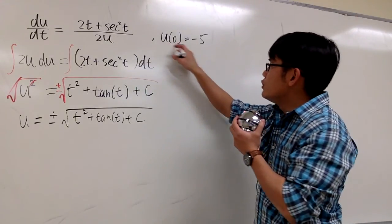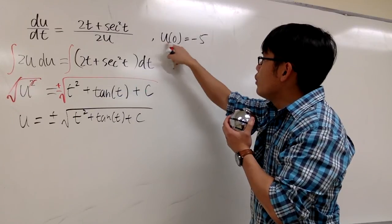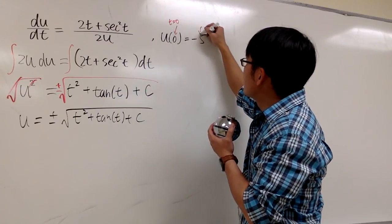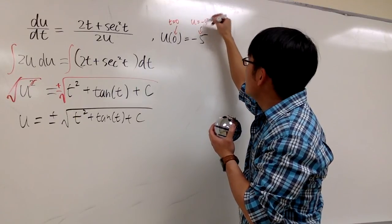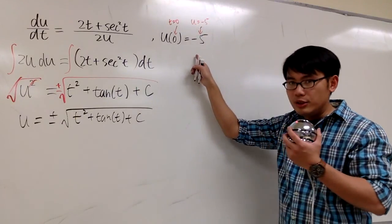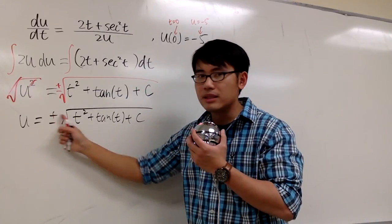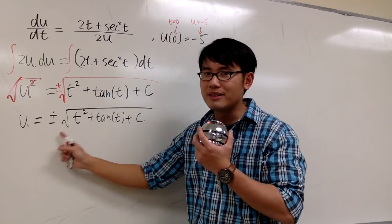With that being said, this initial condition means we have u(0). That means when t equals 0, we must have the u value to be -5. And with this initial condition, we can also make a decision: should we keep the plus square root or should we keep the minus of the square root?